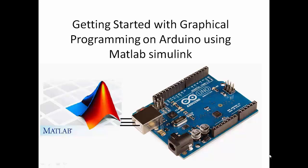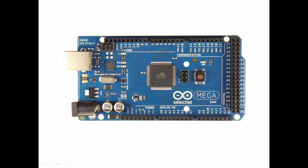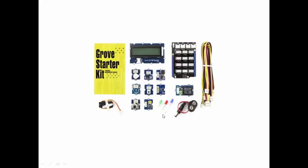We'll be playing with many basics that you need to get started with Arduino. Here are some of the components I used to cover this entire course: Arduino Mega, Seed Studio Sidekick for Arduino, an accelerometer, L293 motor driver, and a toy DC motor. This is our Arduino Mega board, and this is the Sidekick. It has all the basic sensors, which you can also buy from any other electronics shop.